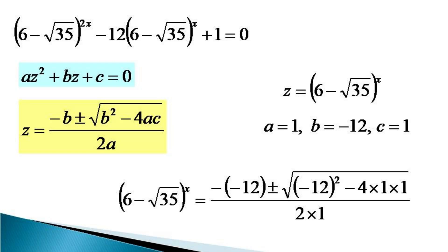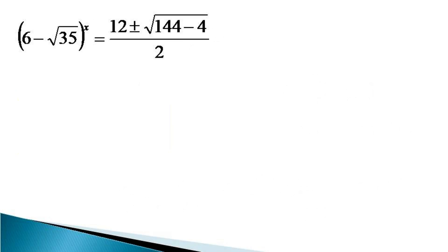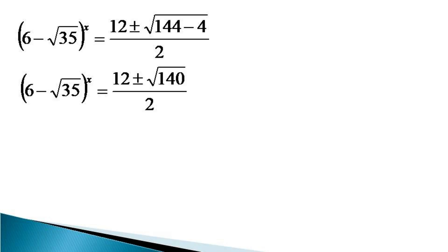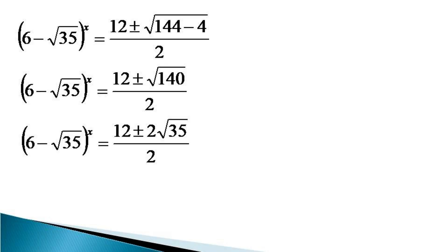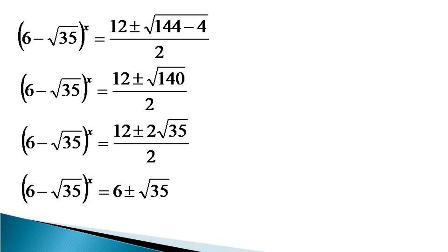This simplifies to (6 minus √35)^x = (12 ± √140) / 2, which becomes (12 ± 2√35) / 2, and finally in simplest form (6 minus √35)^x = 6 ± √35. So we get two values of (6 minus √35)^x.